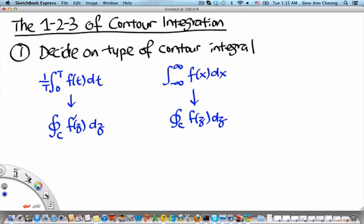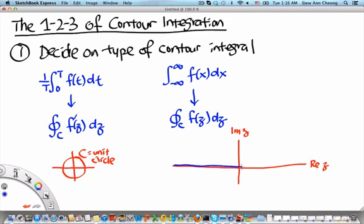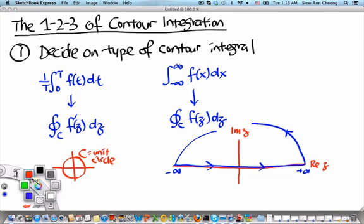For the periodic case, the function may be different, and the closed contour is always just a unit circle — so c is the unit circle. Whereas for the integral from minus infinity to plus infinity, plotting the real and imaginary parts of z, the closed contour is very frequently a semicircle that goes from minus infinity to plus infinity and back, with the sense of the contour going counterclockwise.